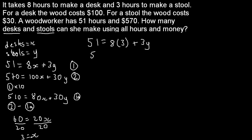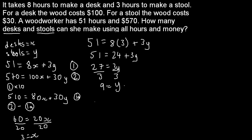This equation has one variable, y, so we can work that out. 51 equals 24 plus 3y. Subtract 24 from both sides: 27 equals 3y. Divide both sides by 3, and that gives us y equals 9.